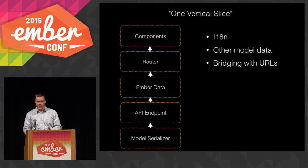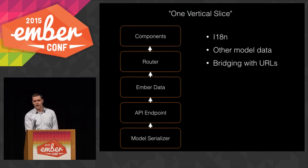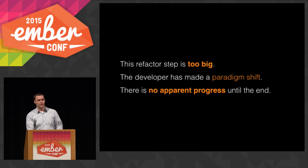They'll serialize their models, make API endpoints, use Ember Data, start using the router, and finally get to the components — which is kind of the end goal. And along the way you'll be thinking: how am I going to get these translations over to the front end? Oh, I forgot I need the user data over there. How am I going to bridge my URLs between the server part and the client part of the application? That refactor step is just too big. The developer has to make a paradigm shift from server-rendered to client-rendered applications, and there's no visible progress until the very end.